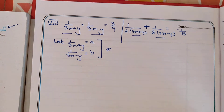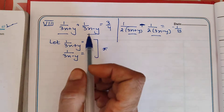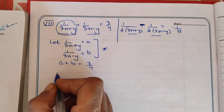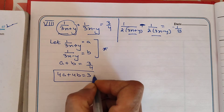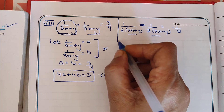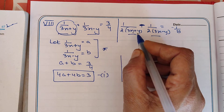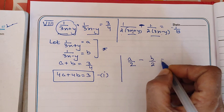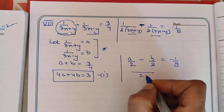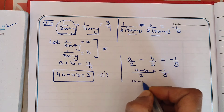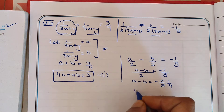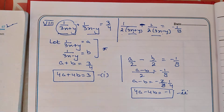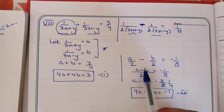The equation becomes: a plus 2b — placing 1/(3x+y) as a and 1/(3x−y) as b — gives us (3/4). We cross-multiply: 4a plus 4b is equal to 3. This is our first equation. Similarly, solving the second equation: a/2 minus b/2 equals −1. Taking LCM of 2: a minus b equals −1/8. Cross-multiplying gives us our second equation.